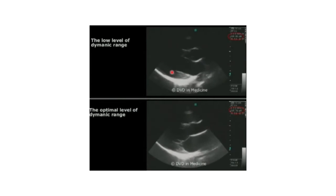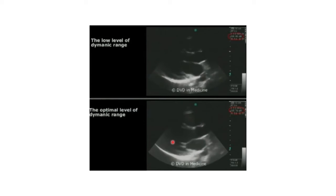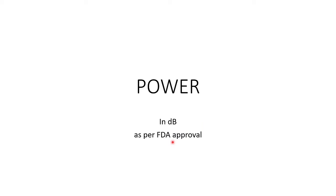The optimal level of dynamic range can be adjusted using a cine image — you can change the dynamic range and, according to your preference for how it is viewing better, set that dynamic range and continue.